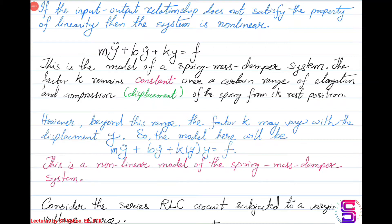In the previous lectures, we saw about linear systems — the stability, controllability, observability, design of controllers and design of observers. The system is said to be linear if the input-output relationship satisfies the linearity property. If the linearity property is not satisfied, then the system is said to be a non-linear system.